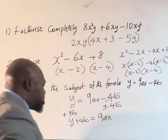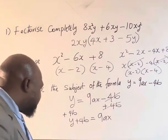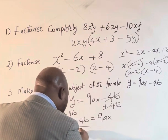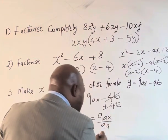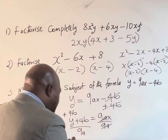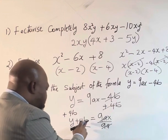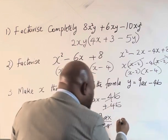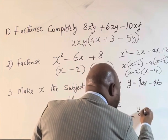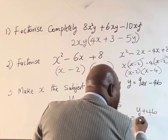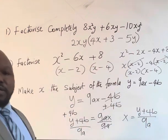The next thing is to divide both sides by nine a. So divide both sides by nine a. Nine a, that a will cancel nine a, so you have only x here and you have y plus four b over nine a. So x equals y plus four b over nine a. That's all.